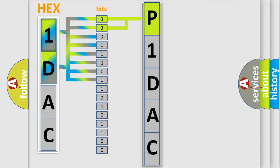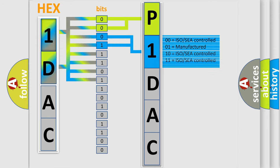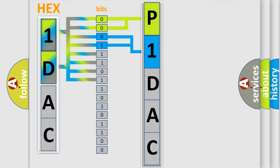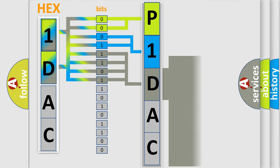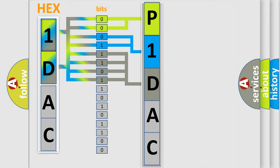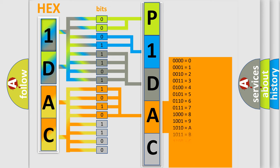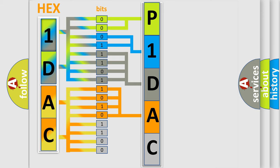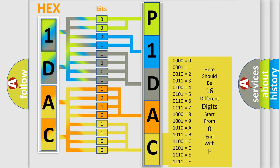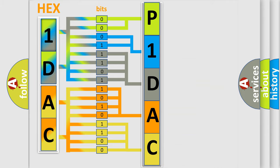The next two bits determine the second character. The last bits of the first byte define the third character of the code. The second byte is composed of a combination of eight bits. The first four bits determine the fourth character of the code, and the combination of the last four bits defines the fifth character. A single byte conceals 256 possible combinations.